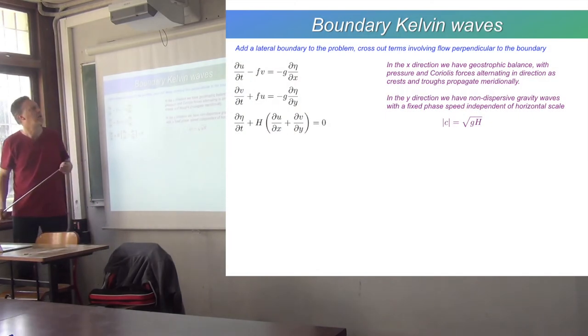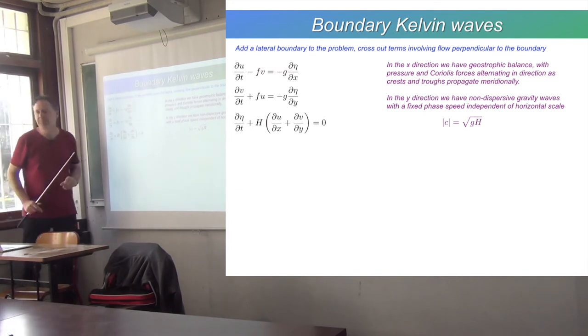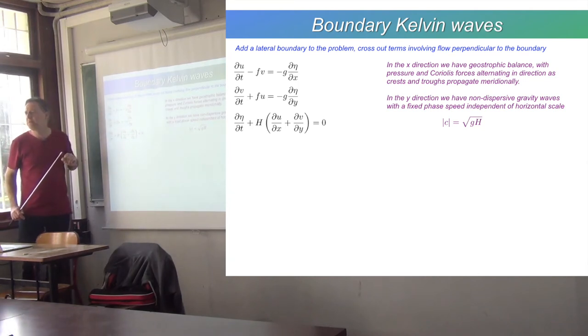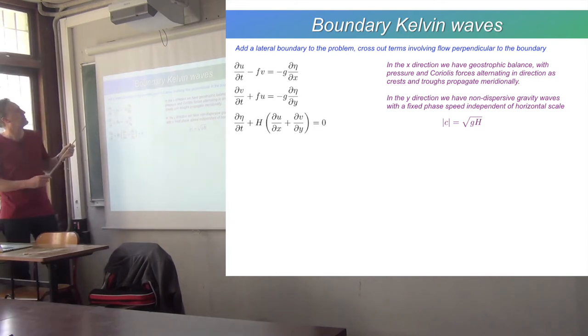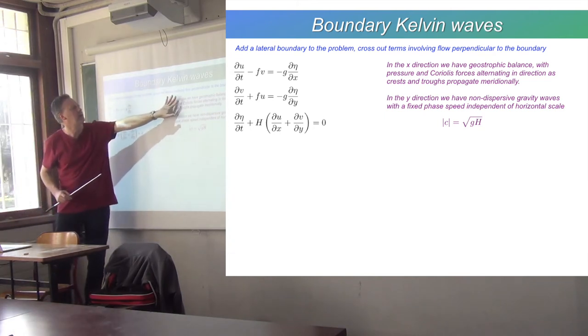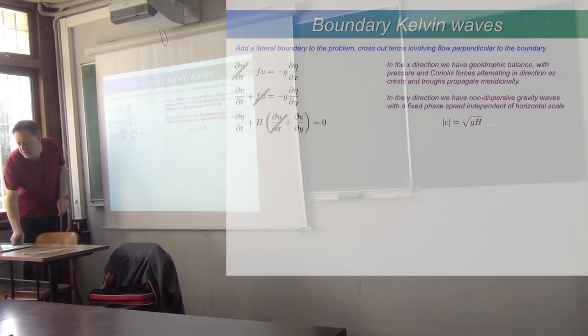They are called boundary Kelvin waves. So we'll go back to the problem again. What we'll do now is take the same equation set, but we will add a constraint. We'll add a lateral boundary to the problem and cross out terms involving flow perpendicular to that boundary.